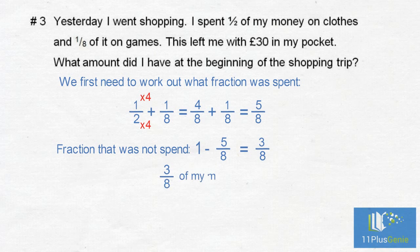Three-eighths of my money equals thirty pounds. We divide by three to find one-eighth. One-eighth of my money is ten pounds. To find the total amount, we times by eight. I started my shopping trip with eight lots of ten pounds, which equals eighty pounds.